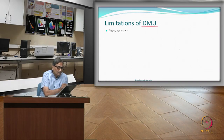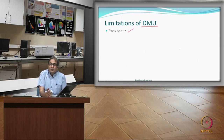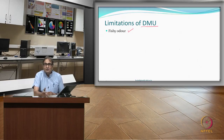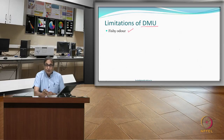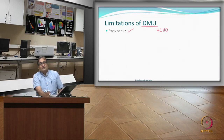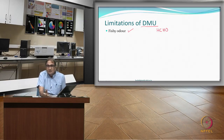One limitation of DMU which we understood was the fishy odor. These compounds were made by condensation of formaldehyde with urea. After being applied to a textile, because of equilibrium reactions, formaldehyde can be released during storage or washing — this whole link can hydrolyze and break, releasing formaldehyde. The odor of that released formaldehyde is called the fishy odor. Fabrics treated with DMU resulted in this fishy odor.